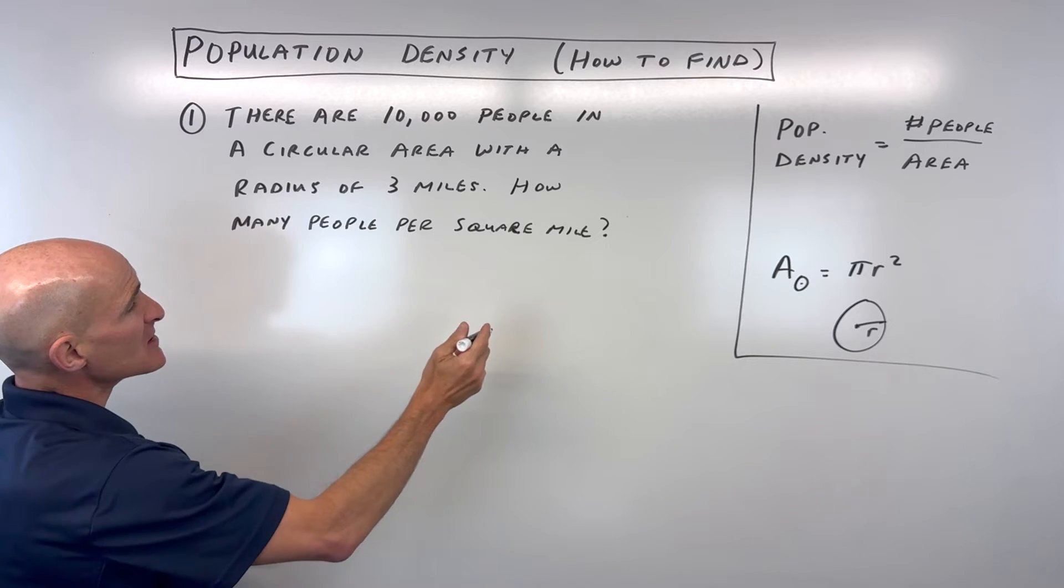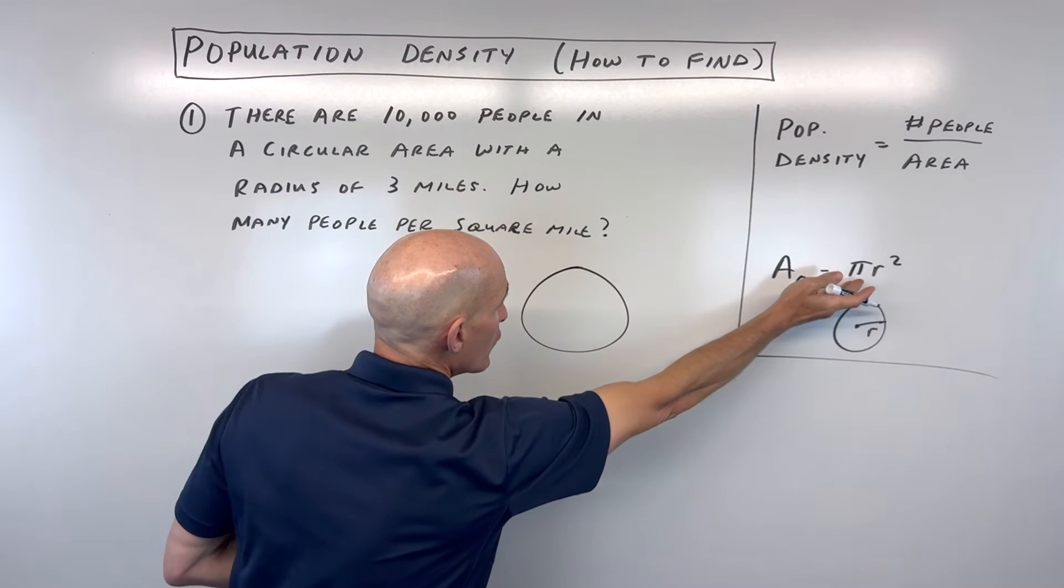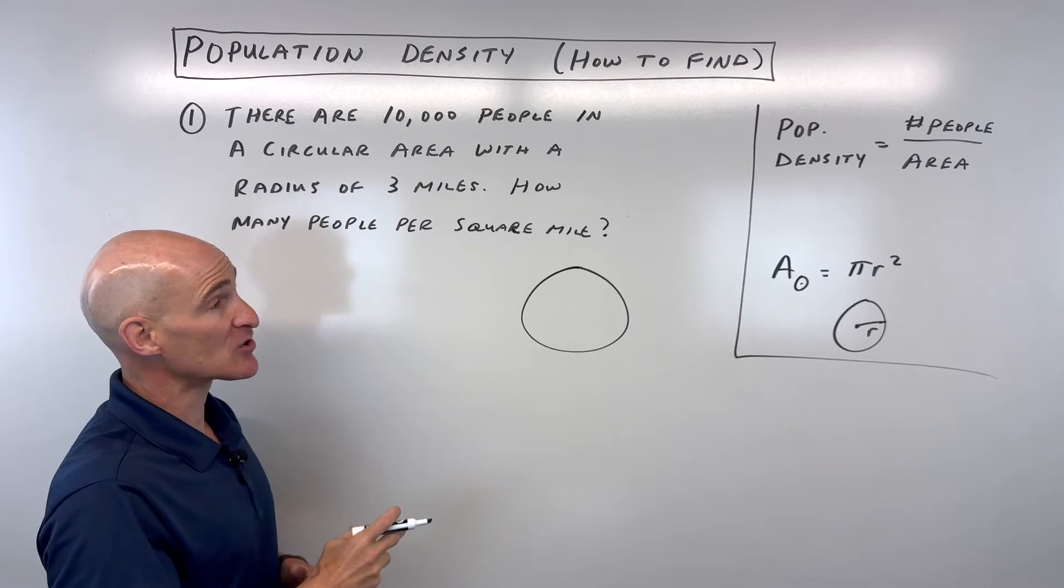The other thing we need to know in this problem is it's a circular region. We have to find the area of that circular region. We're going to use the formula for the area of a circle which is pi times the radius squared.